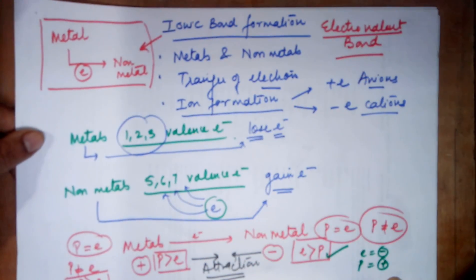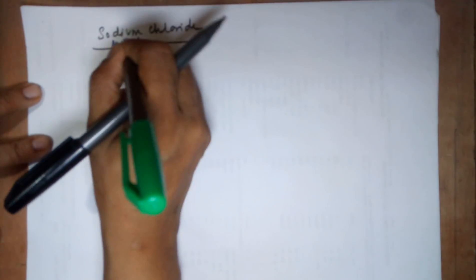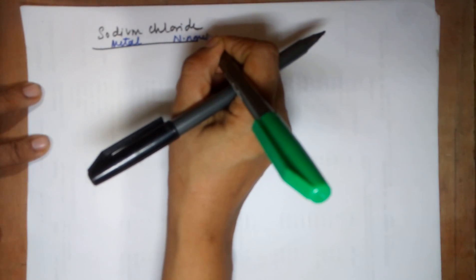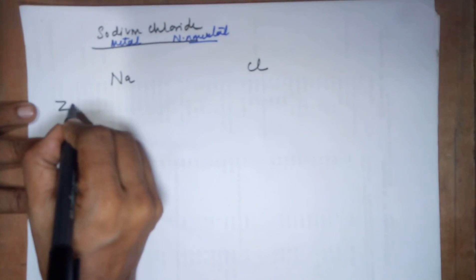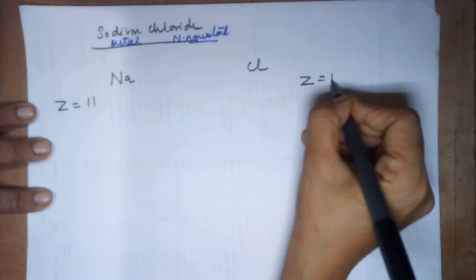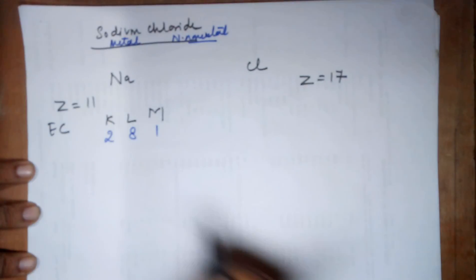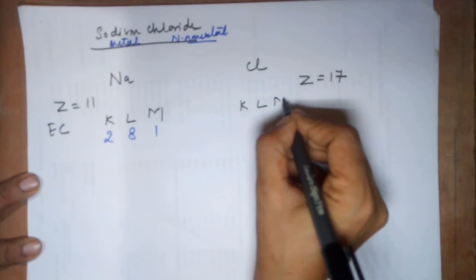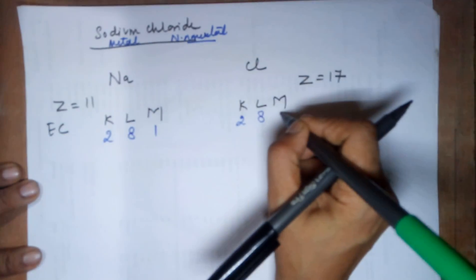Moving to examples — the first and simplest is sodium chloride. In my last video I explained Lewis dot structures; in this video I'll use those to explain the formation of sodium chloride, an ionic compound. Sodium is the metal, chlorine is the non-metal. The atomic number for sodium is 11; for chlorine it is 17. The electronic configuration of sodium is K=2, L=8, M=1. For chlorine: K shell has 2 electrons, L shell has 8 electrons, leaving 7 more in the outer shell.